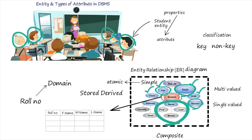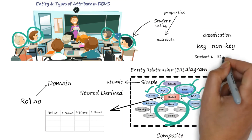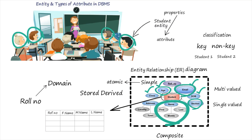All other attributes are known as Non-Key Attributes, meaning two or more entities can have the same value for these attributes. For example, if we have Student 1 and Student 2 as two different entities, the attribute 'name' is a non-key attribute because both students may have the same name — say, both named A. So, whenever certain properties are common to two different entities, those attributes are known as non-key attributes.